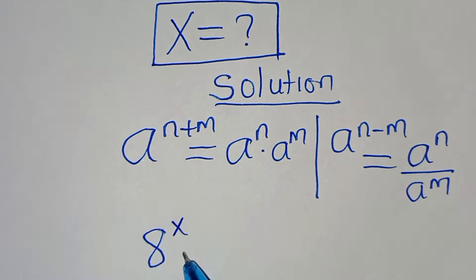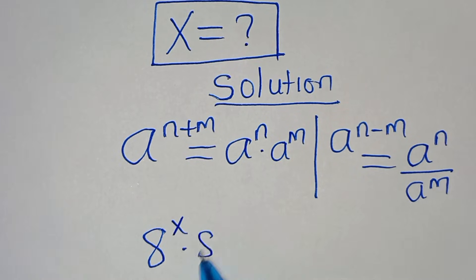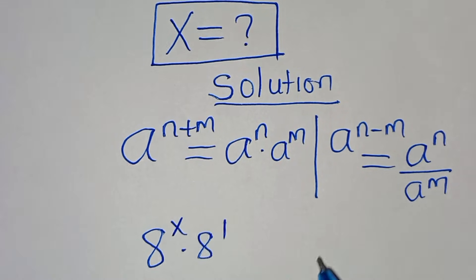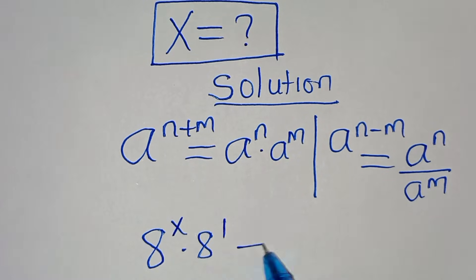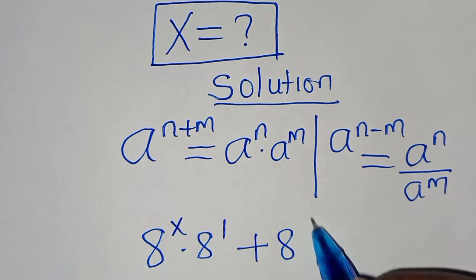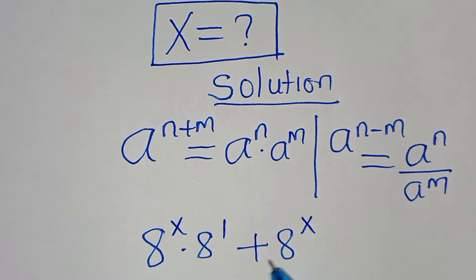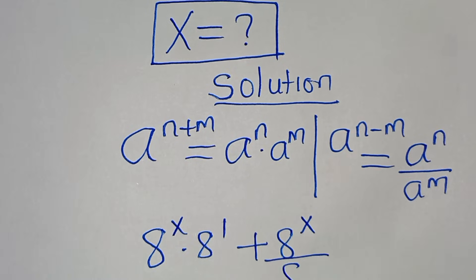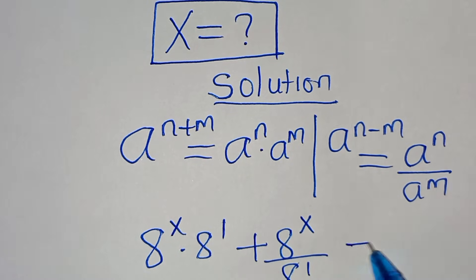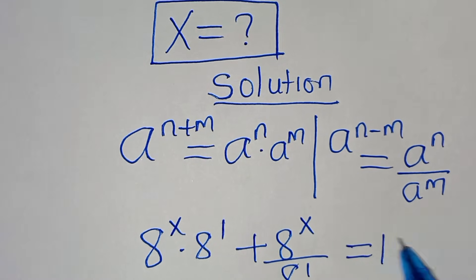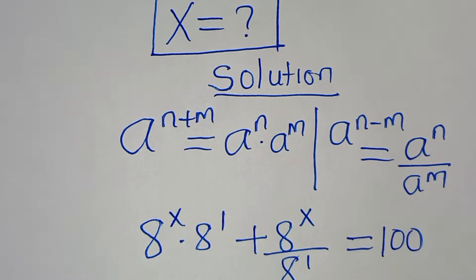Applying these properties gives us: 8^x multiplied by 8^1, plus 8^x divided by 8^1, and this equals 100.